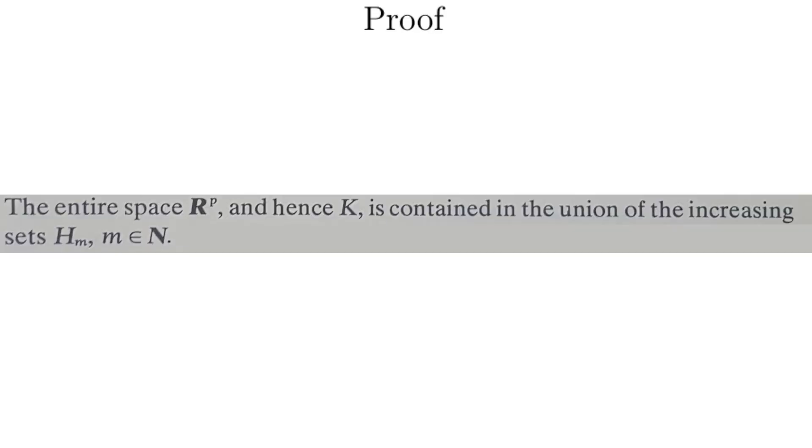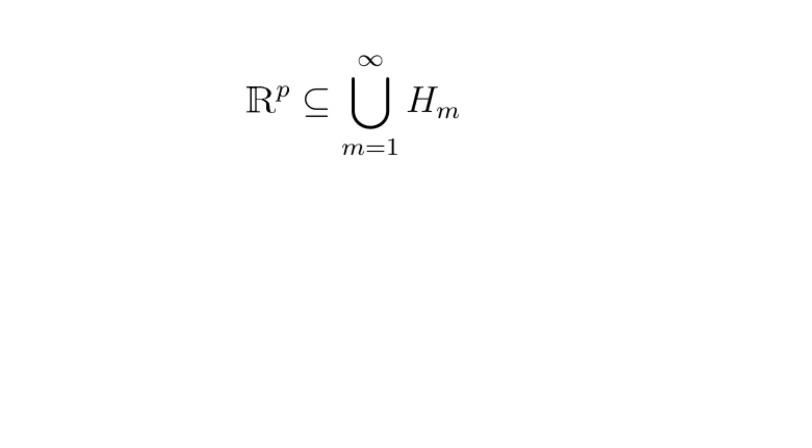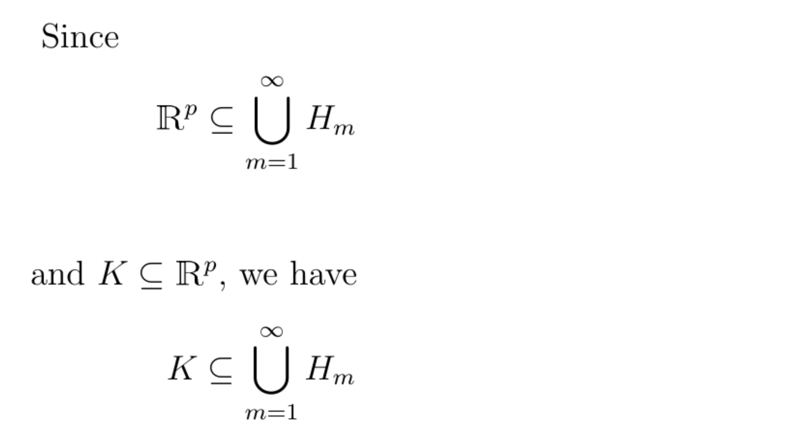Proof. The entire space R^p, and hence K, is contained in the union of the increasing sets H_m, m is a natural number. All of R^p is in the countable union of the H_m's, since given any point z in R^p, eventually there will be an m where the norm of z is less than m, since the m's grow to infinity. Since all of R^p is in the union of the H_m's, K must be in the union. Also, the sets are increasing like before. H_1 is a subset of H_2 is a subset and so on.